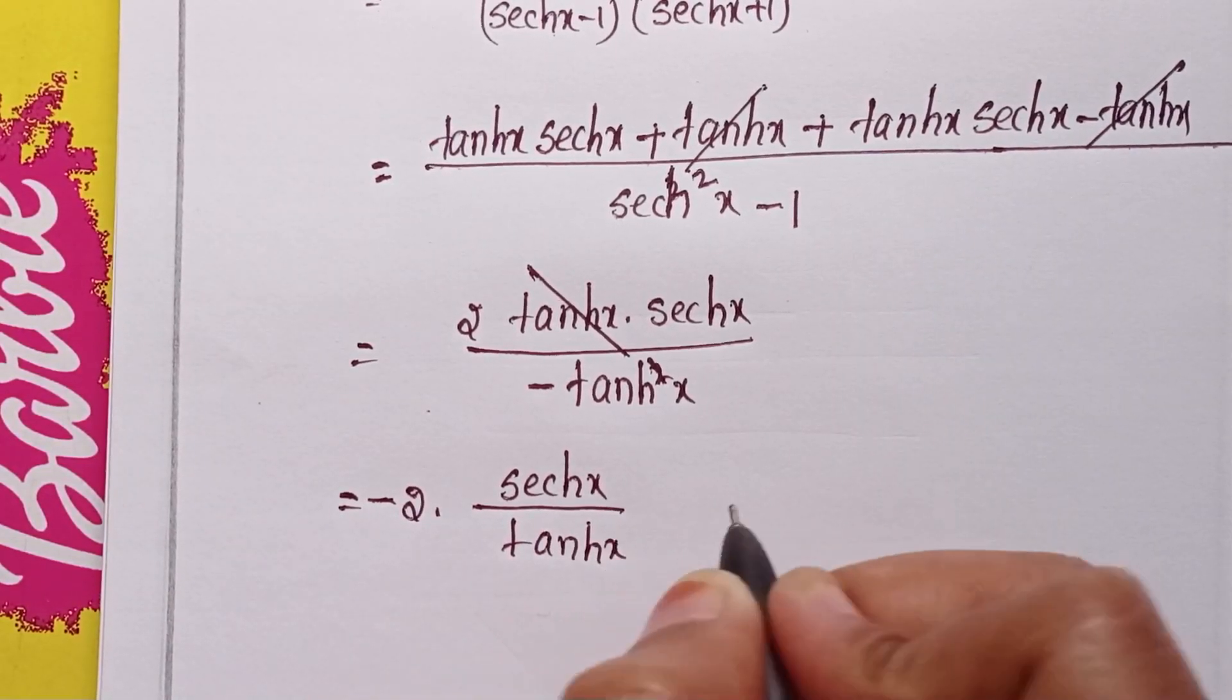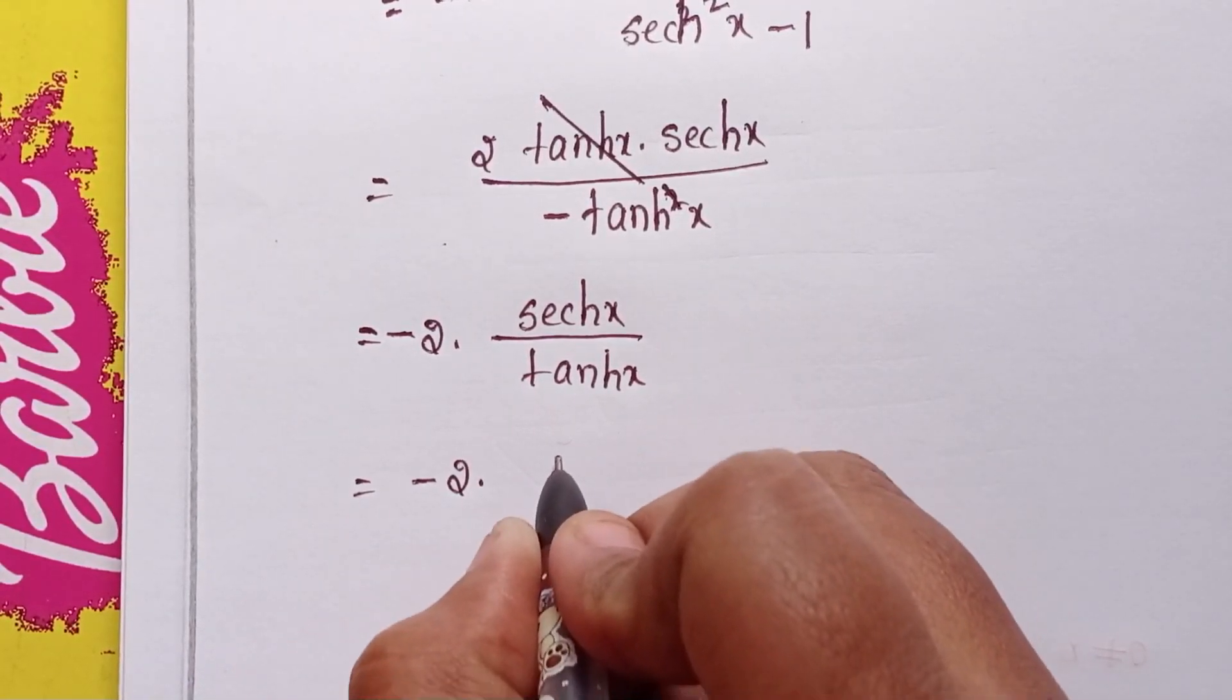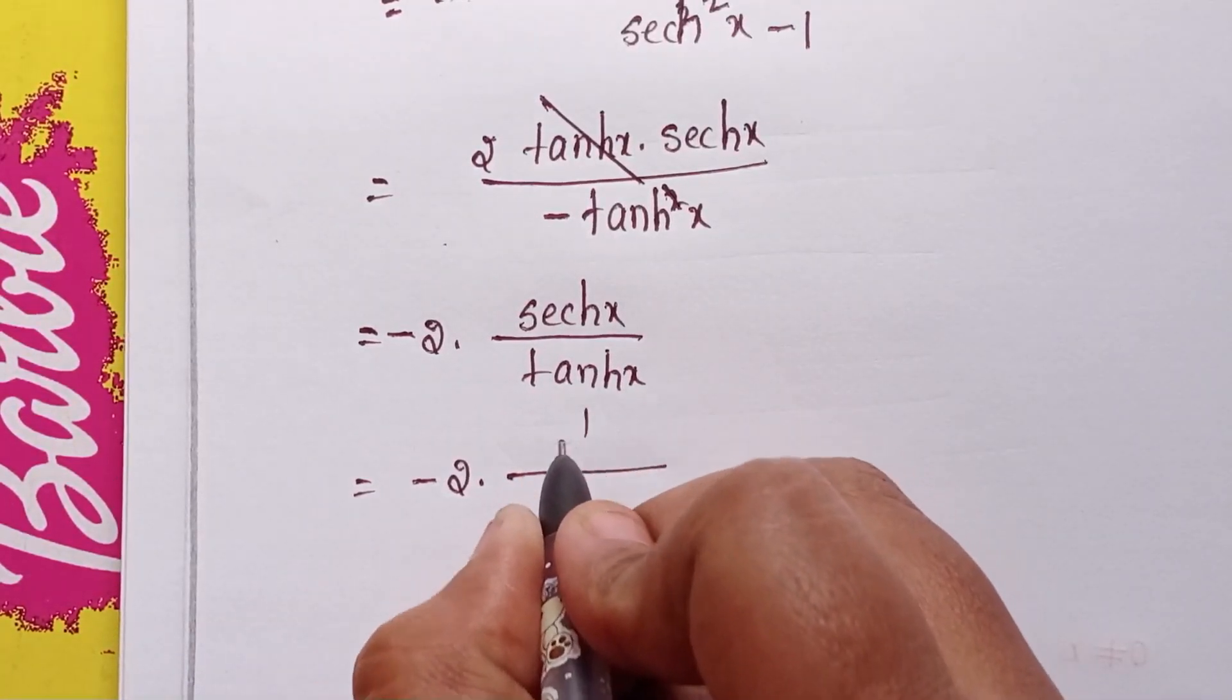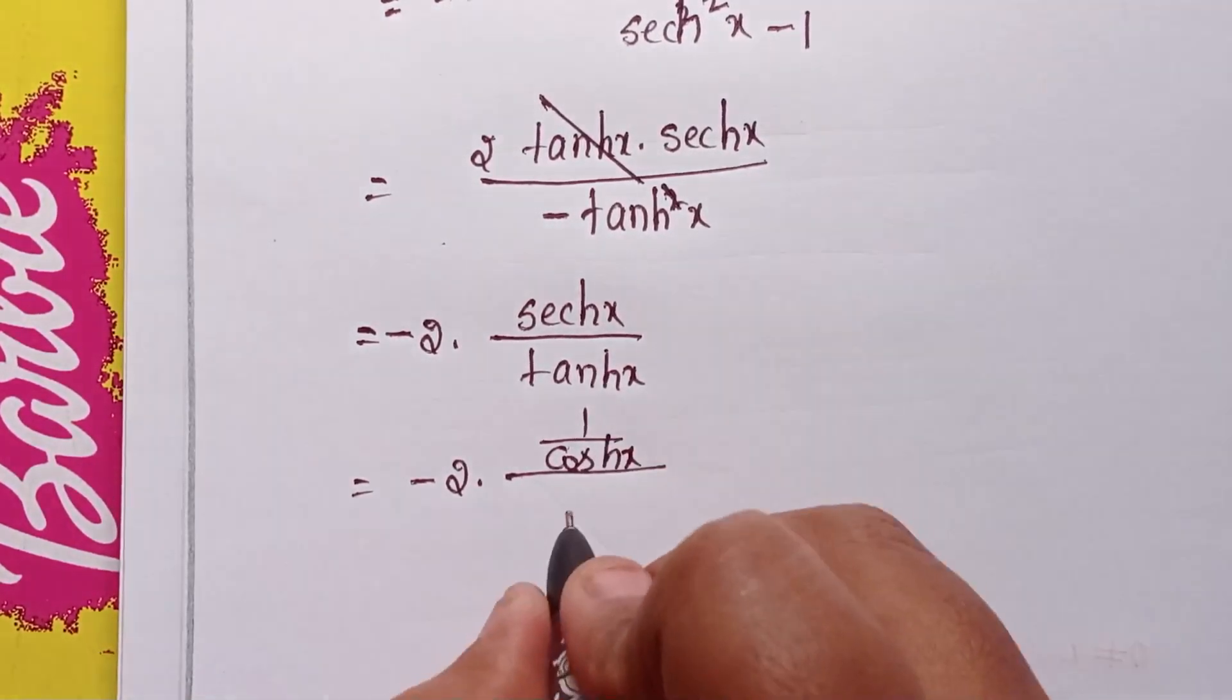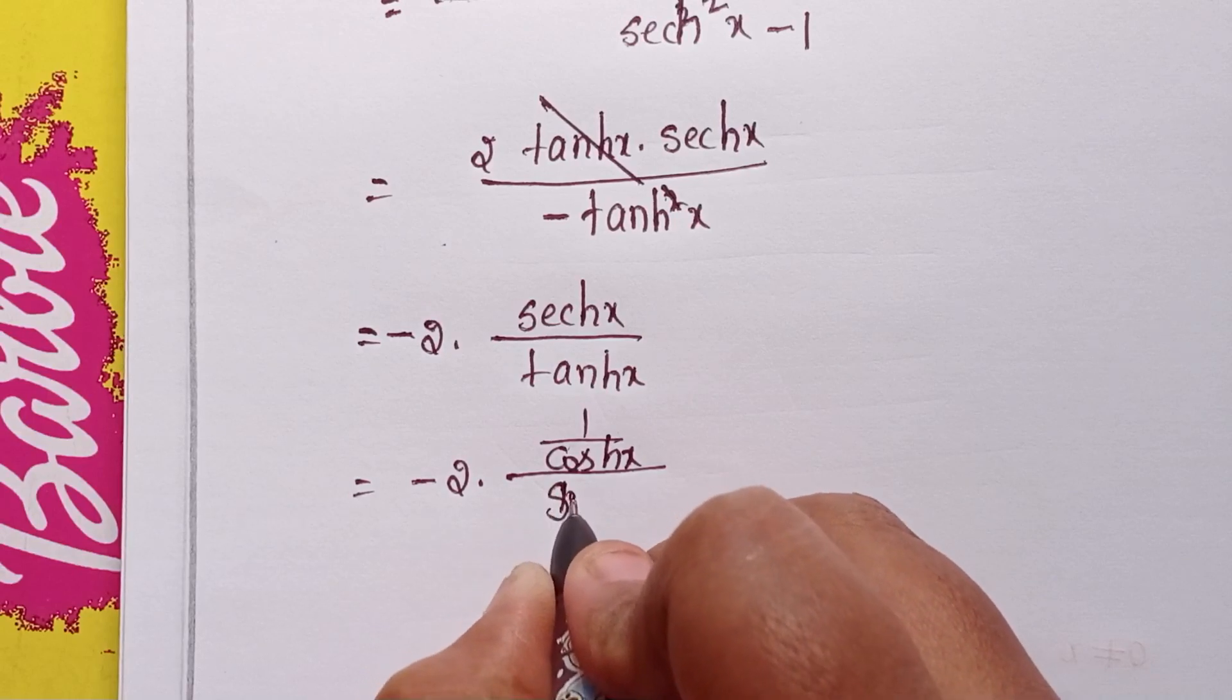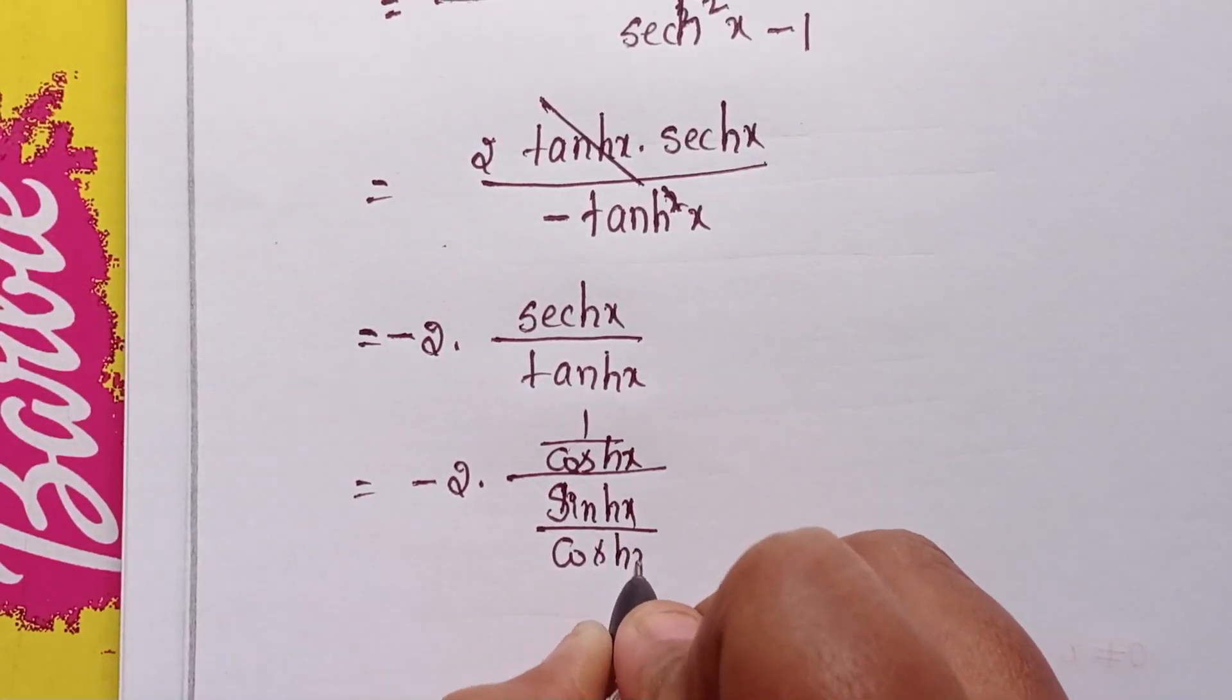This equals minus 1 over cosh x, minus 1 over cosh x. This becomes sinh x over cosh x, cosh x.